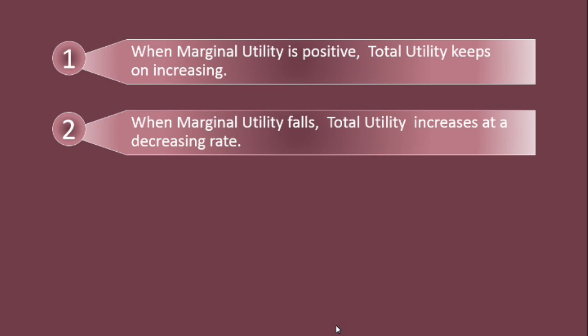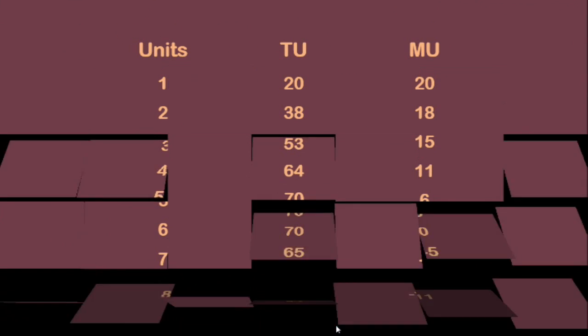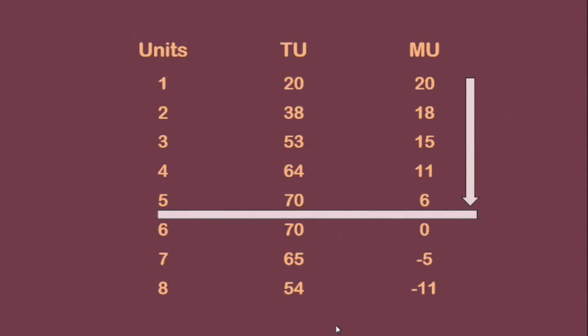Second relation: when marginal utility falls, total utility increases at a decreasing rate. Marginal utility falls from the first apple to the fifth apple. Look at the total utility column. When total utility increases from 20 units to 38 units, the rate of increase is 38 minus 20, which is 18 units. When total utility increases from 38 units to 53 units, the rate of increase is 53 minus 38, which is 15 units.